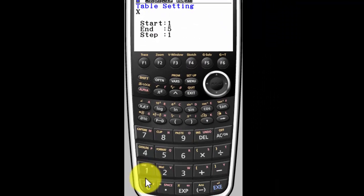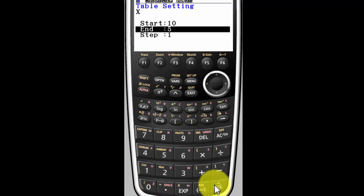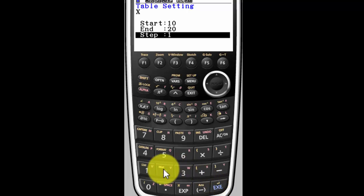We want it to start at 10. Execute. We want to go to 20. And we want to do it in increments of 2.